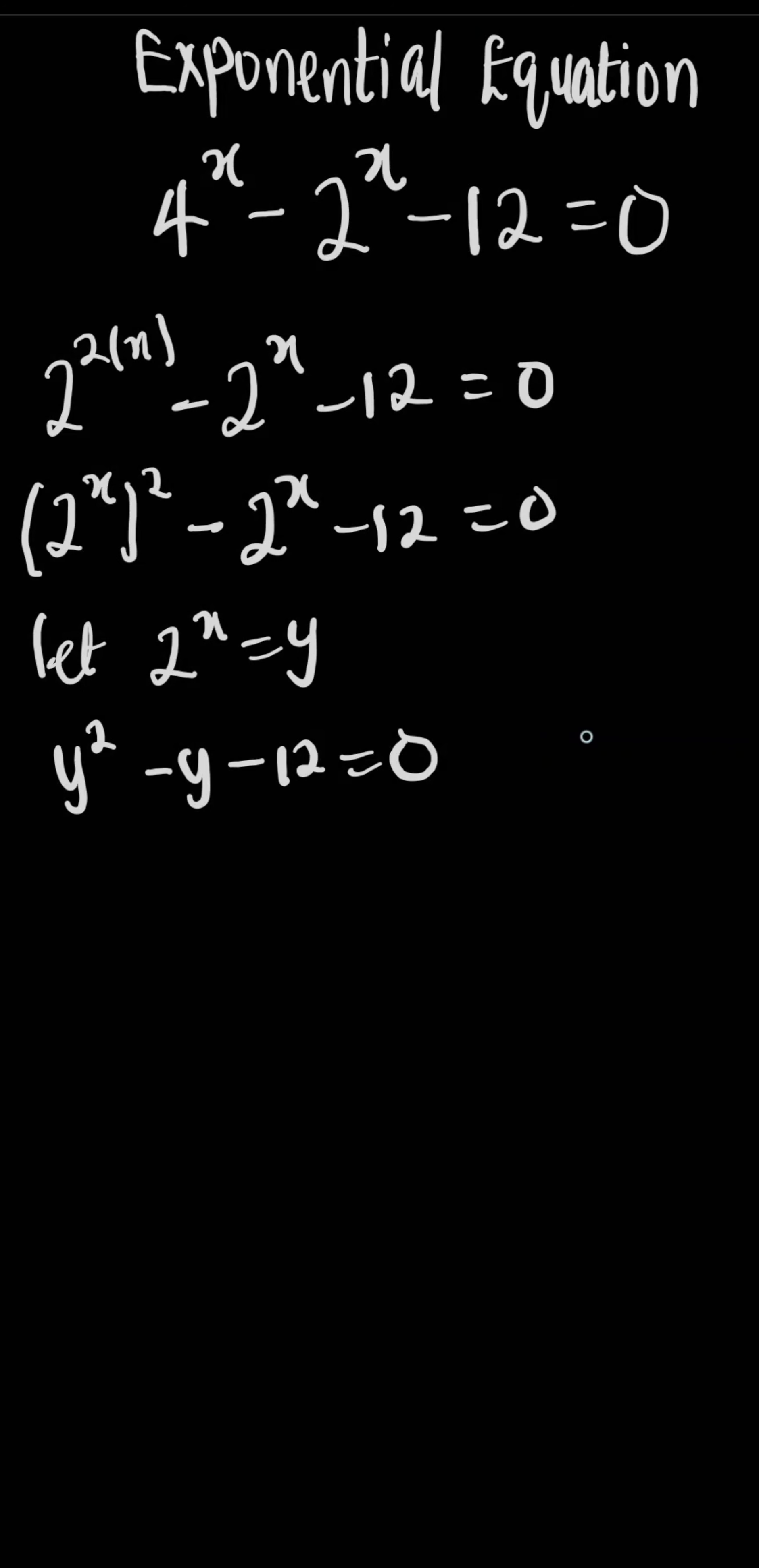We need two factors such that when you multiply, it's going to give you 12. The factors of 12 are 1 and 12, 2 and 6, and 3 and 4. Looking at this, we need 3 and 4.